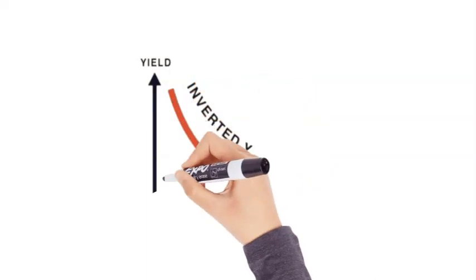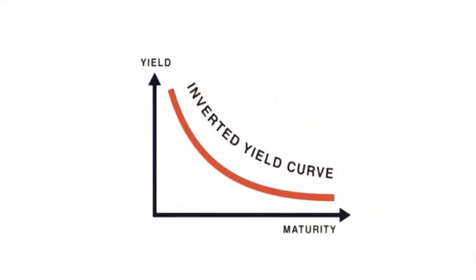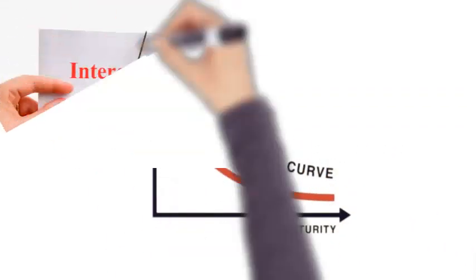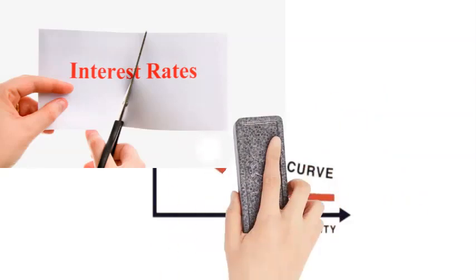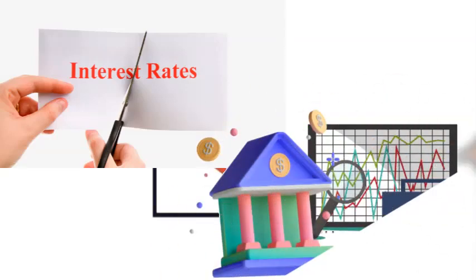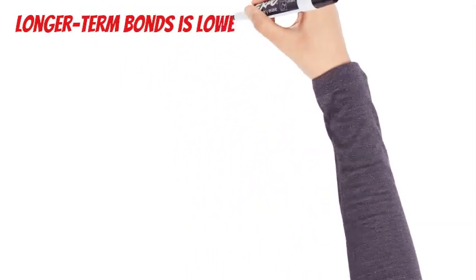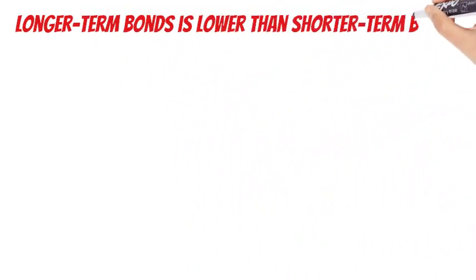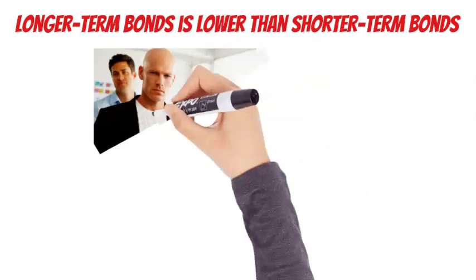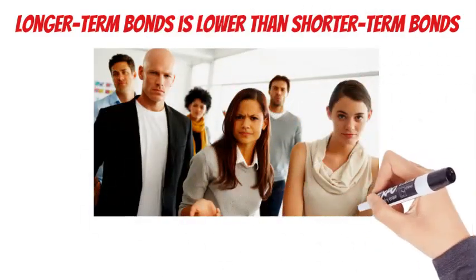Nevertheless, bond yields reverse direction when a recession is looming because investors anticipate a cut in interest rates from central banks that are trying desperately to stimulate the economy. As a result, the return on longer-term bonds is lower than that of shorter-term bonds. This is something that is happening everywhere right now.